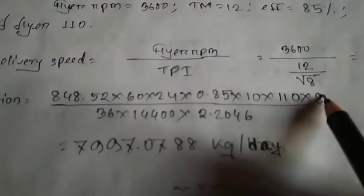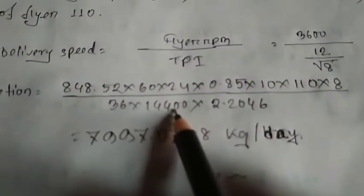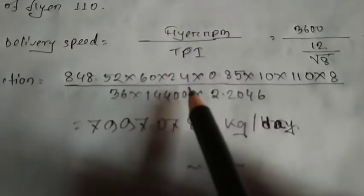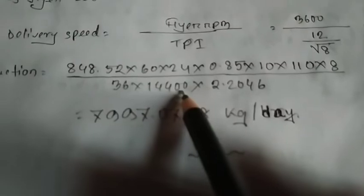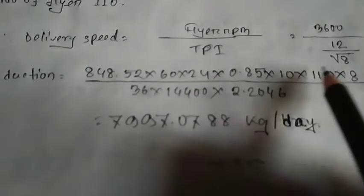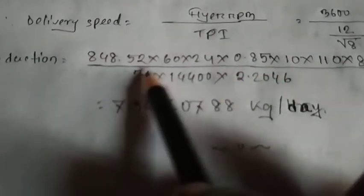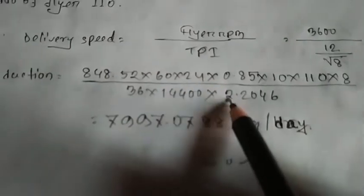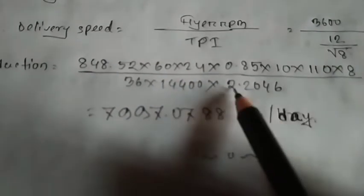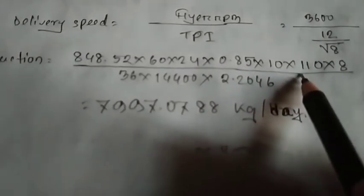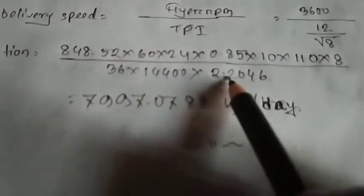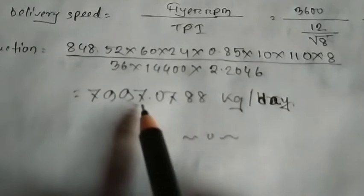This is the delivery speed. This is 8 inch per minute. Then I will move the exact number. The number is 14,600. The number is 44,600 into 100. It is actually 20,000 pounds. This is also 15,000 pounds.